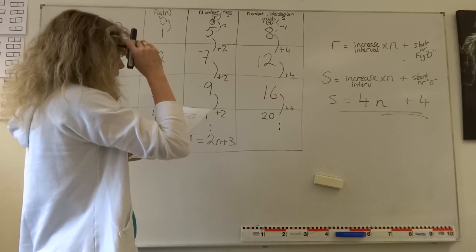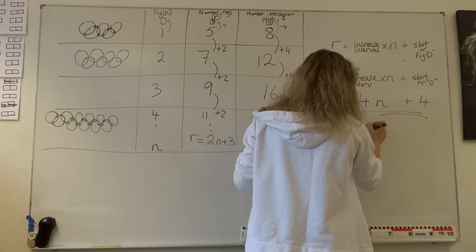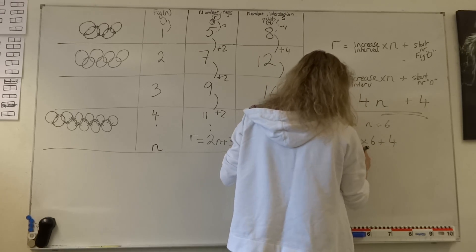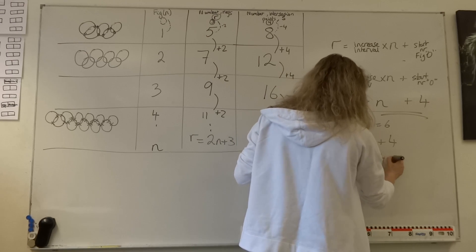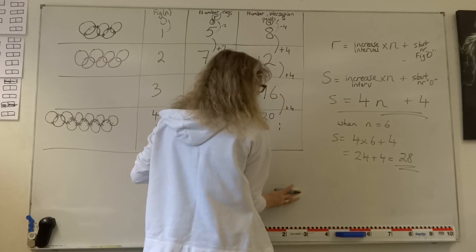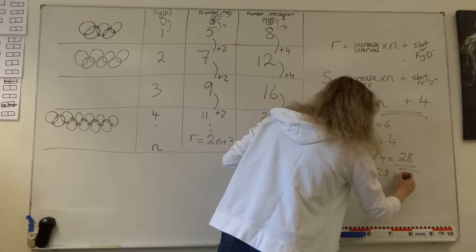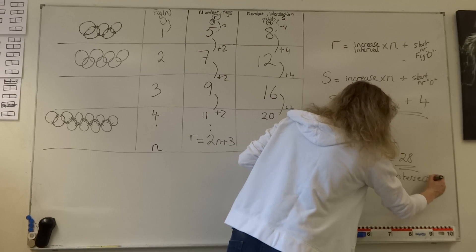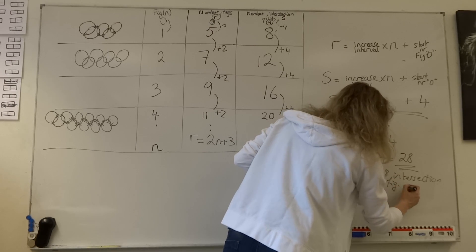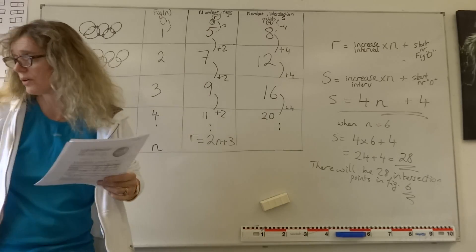The question is how many intersection points will there be for figure number 6? When n = 6: S = 4 times 6 plus 4 = 24 plus 4 = 28. So there will be 28 intersection points. Don't forget to write a full answer: there will be 28 intersection points in figure number 6. When you've done it like that, you also have a good explanation.